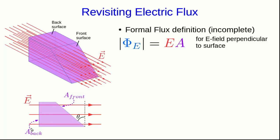So, the flux through this back surface has to be just the negative of the electric field strength times the area of the back surface, since that surface is perpendicular to the field.